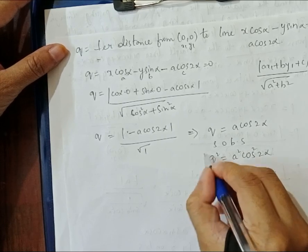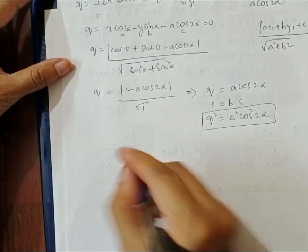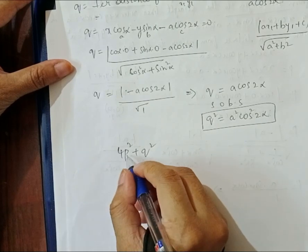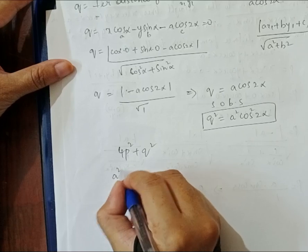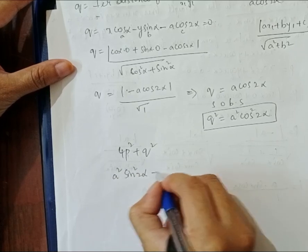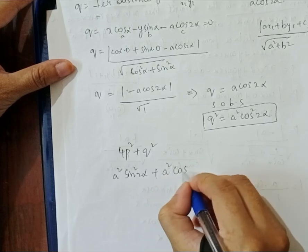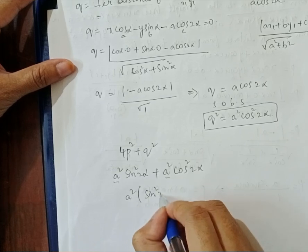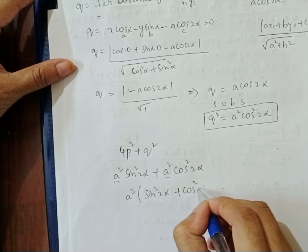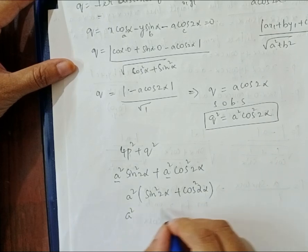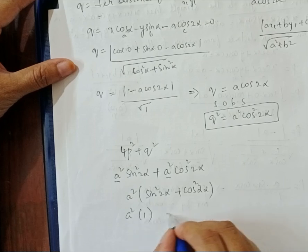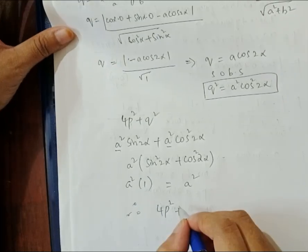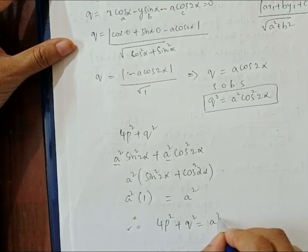Now, 4p² + q² = a²·sin²(2α) + a²·cos²(2α). Taking a² common: a²·(sin²(2α) + cos²(2α)). Applying the identity sin²(θ) + cos²(θ) = 1, this equals a²·1 = a². Therefore, we have proved that 4p² + q² = a².